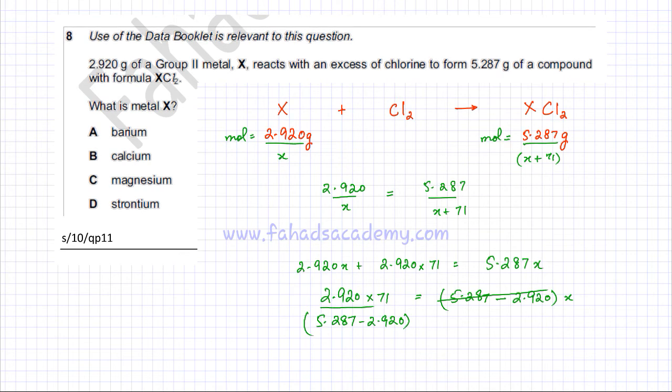Using my calculator, it's going to be 2.920 multiplied by 71, divided by 5.287 minus 2.920. Solving this on my calculator, the value I'm going to get is X equals 87.6, so this is the AR of X.